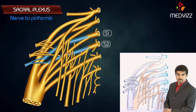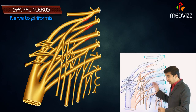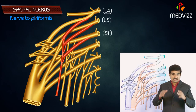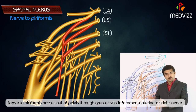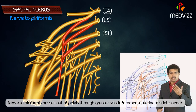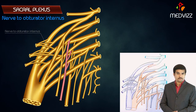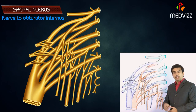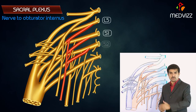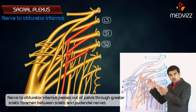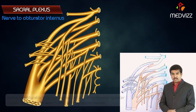The nerve to quadratus femoris is formed from ventral divisions of L4, L5, and S1. After emerging, it passes out of the pelvis through the greater sciatic foramen, anterior to the sciatic nerve. The nerve to obturator internus is formed from ventral divisions of L5, S1, and S2. It also passes out of the pelvis through the greater sciatic foramen, between the sciatic and pudendal nerves.